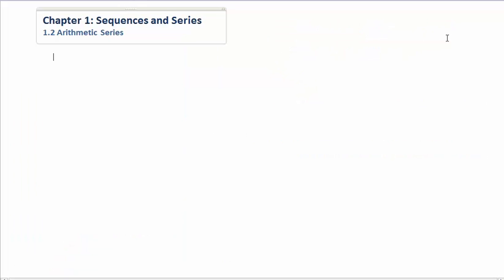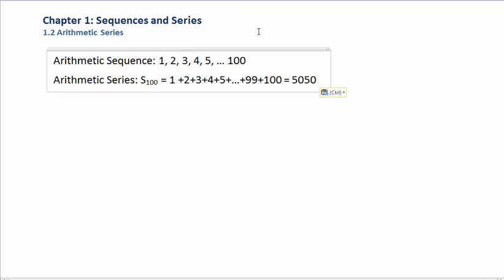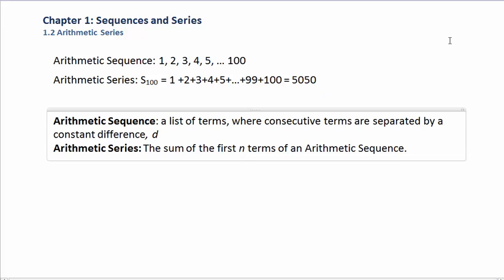Let's observe, then, the difference between an arithmetic sequence and an arithmetic series. An arithmetic sequence is, once again, the list of numbers: 1, 2, 3, and so on up to 100. Whereas an arithmetic series, the sum of the first 100 terms of that sequence is 1 plus 2 plus 3 and so on, which up to 100 is equal to 5,050. A sequence is an ordered list of numbers, whereas a series is the sum of those terms. So an arithmetic sequence is a list of terms where the consecutive terms are separated by a constant difference d, whereas the arithmetic series is the sum of the first n terms of an arithmetic sequence.